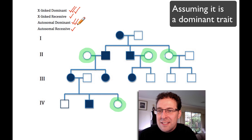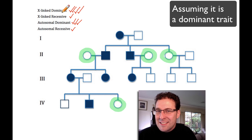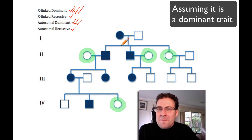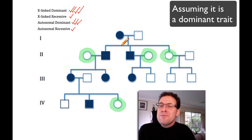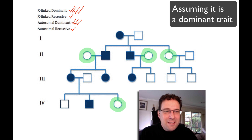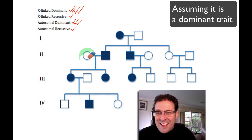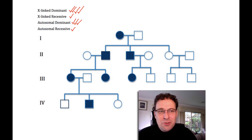Now, we can't prove that it is X-linked dominant. It could be autosomal dominant. But I'm going to put two ticks beside X-linked dominant because it fits the pattern for it. The probability says — and we could go through and work this out genetically — that it's more likely to be X-linked dominant. We can't prove that it's not autosomal. Of course, that's all based on our first assumption that this is a dominant trait.